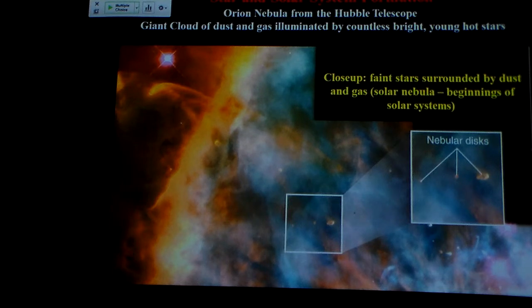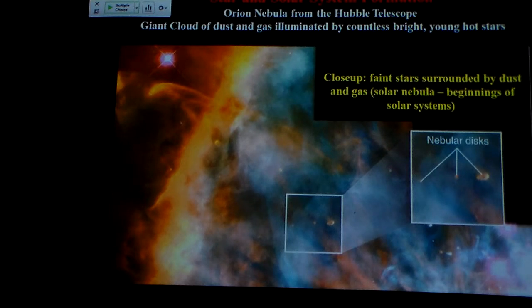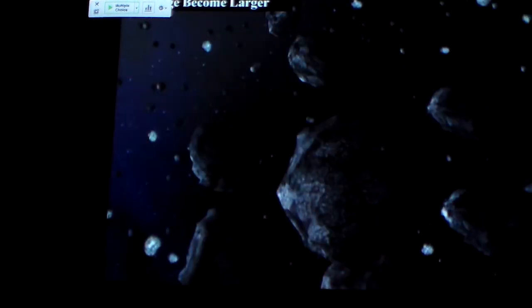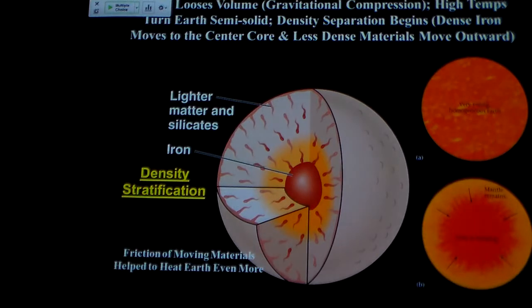We can see solar systems being built today — is that not cool? Is that not just one of the neatest pieces of evidence you could ever hope for? The Hubble Space Telescope when it took this picture paid for itself right there. We see all these little clumps out there, and little by little bigger clumps are pulling them in — they just keep getting bigger and bigger and bigger, and they become planets.